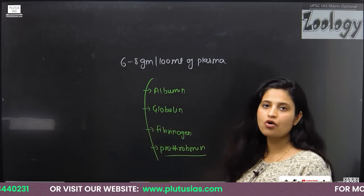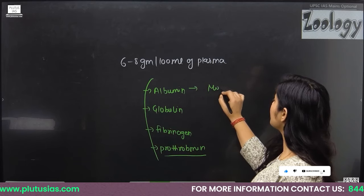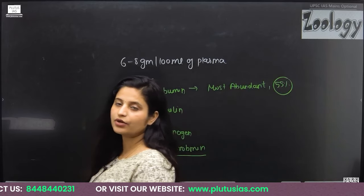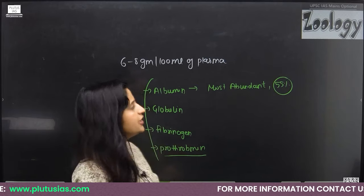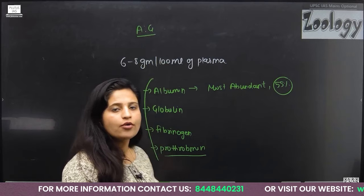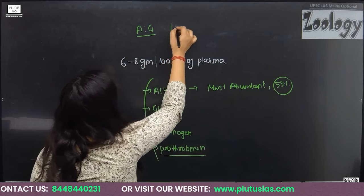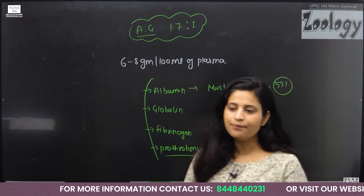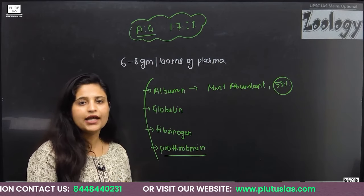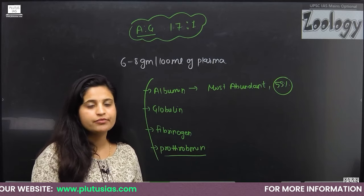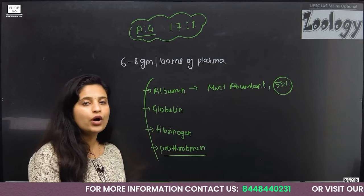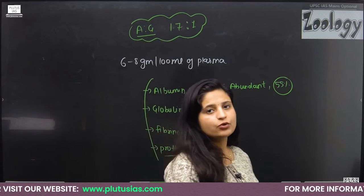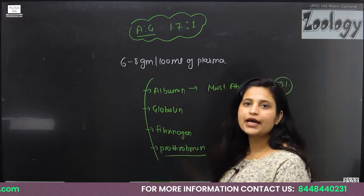Albumin is the most abundant plasma protein, with a volume of about 55 percent. The albumin-to-globulin ratio (AG ratio) in the body is normally 1.7 to 1, but if someone is diagnosed with a medical condition, this value becomes irregular. In plasma, we determine which proteins are present using ultracentrifugation and electrophoresis.